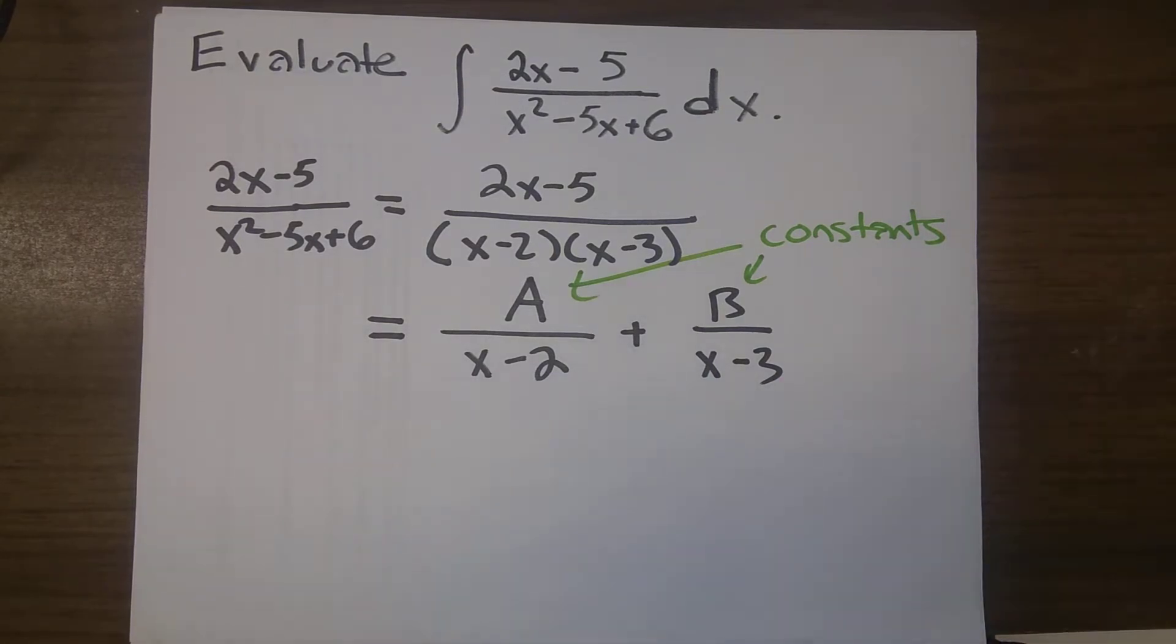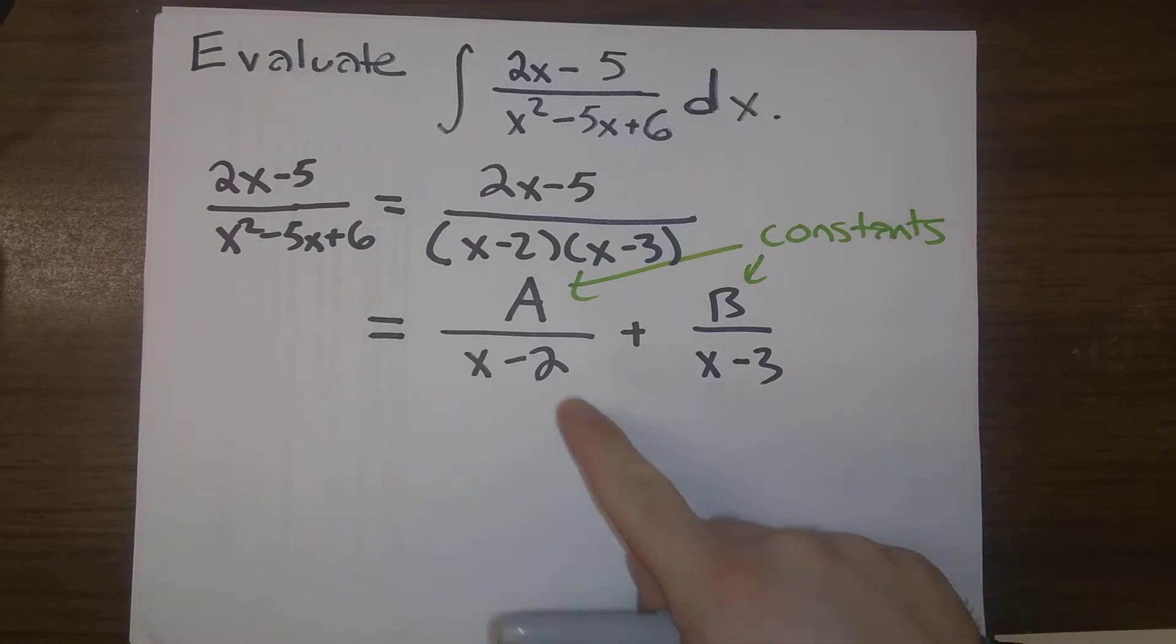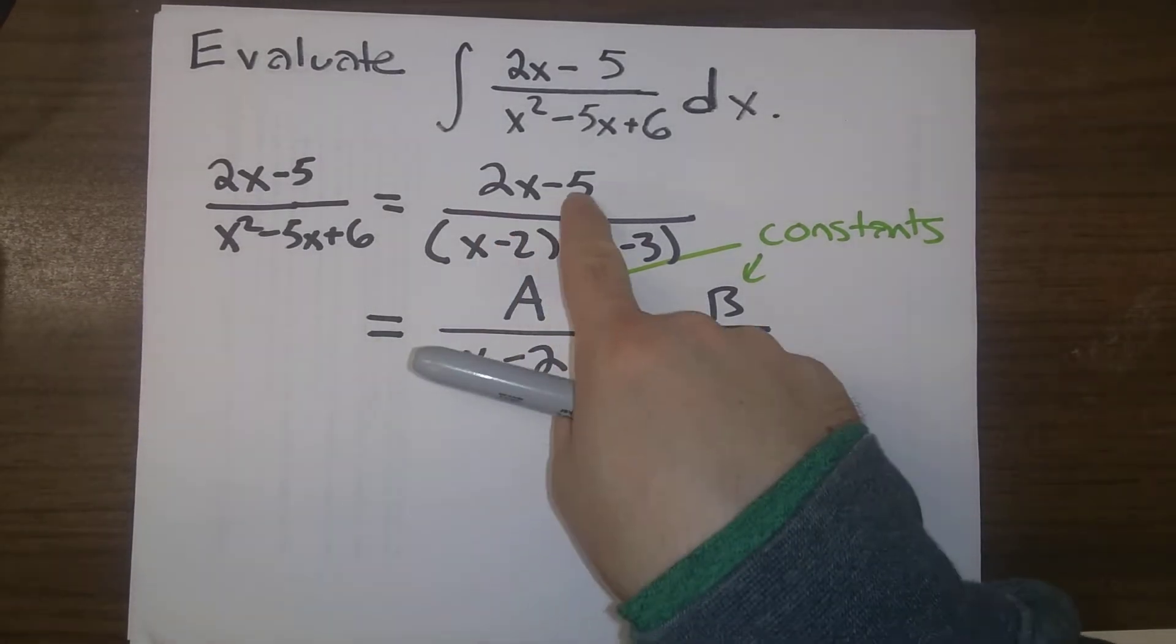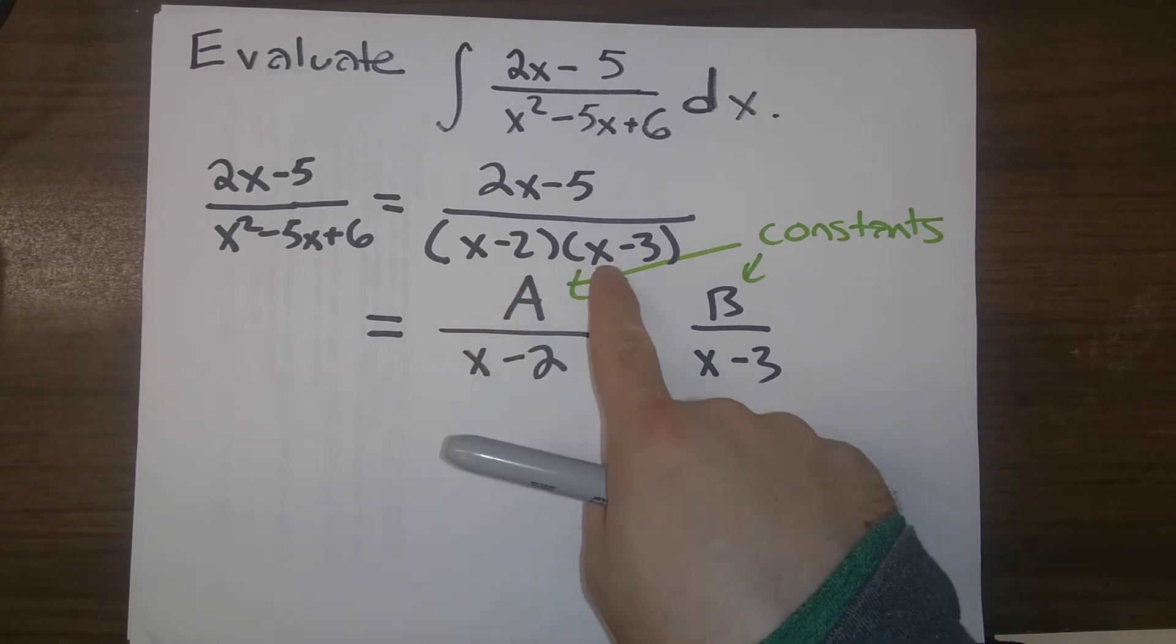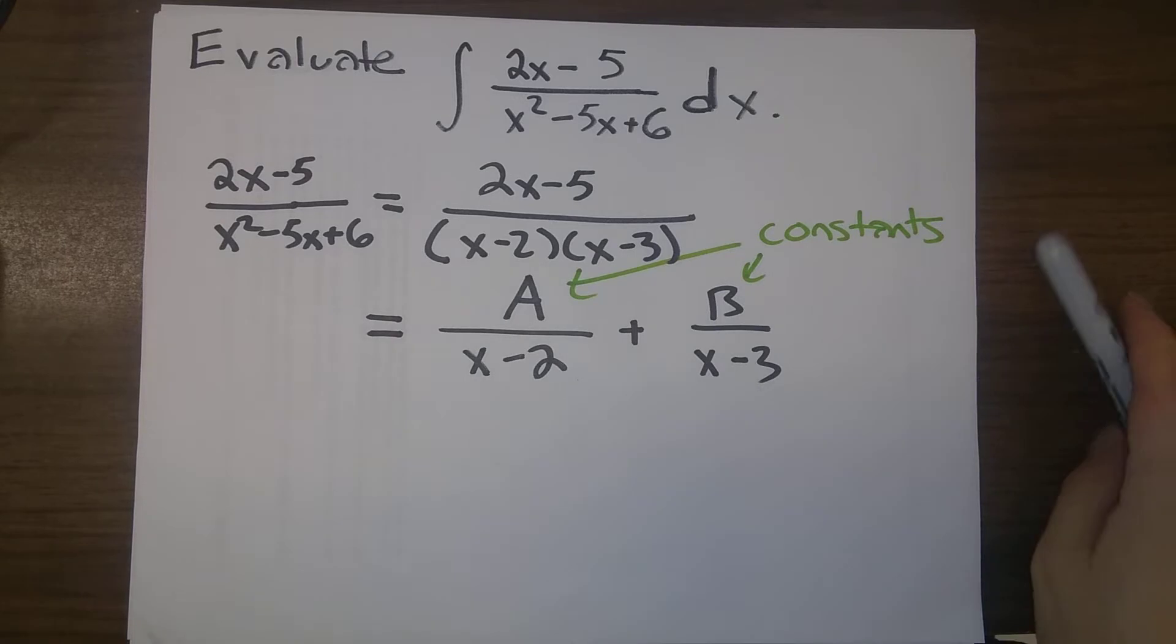There's kind of a deep theorem here that is saying that we can do this. The method of partial fractions is guaranteeing that we can find constants A and B such that 2x minus 5 divided by x minus 2 times x minus 3 is equal to A divided by x minus 2 plus B divided by x minus 3.